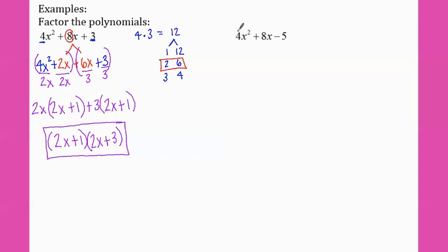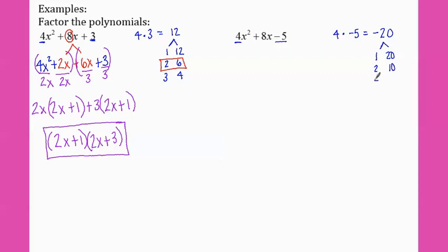So let's try another one. I'm going to multiply a and c: four times negative five gives me negative twenty. The numbers that multiply to give me twenty would be one and twenty, two and ten, or four and five. Since they multiplied to a negative, I know that one of the numbers in each pair has to be negative.